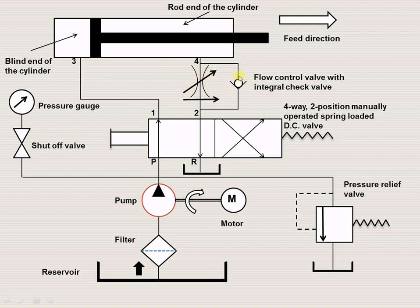This is the hydraulic cylinder. The left end of the hydraulic cylinder is known as the blind end of the cylinder, and the other end — where the piston rod is — is known as the rod end of the cylinder. This is the direction of motion of the piston and it is known as the feed direction. Now let us try to understand with a simple animation how this particular circuit works.